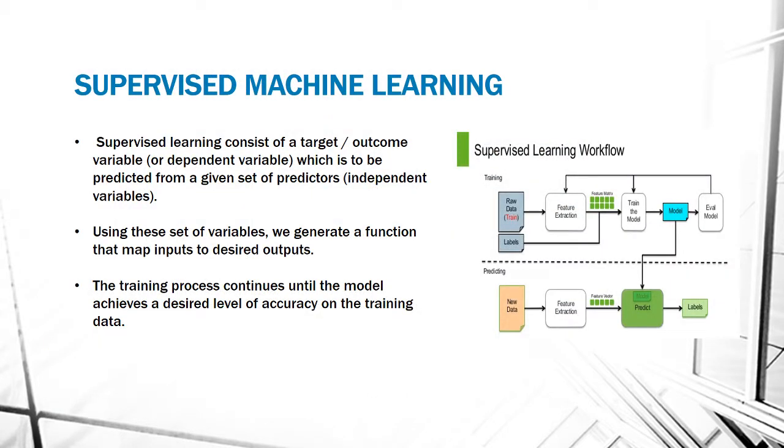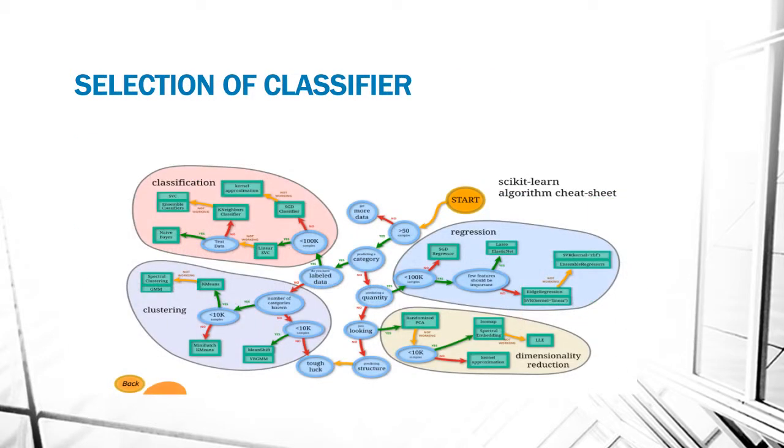Supervised machine learning consists of a target which is to be predicted from a given set of predictors. Using this set of variables, we generate a function that maps inputs to desired outputs. The training process continues until the model achieves a desired level of accuracy on the training data.